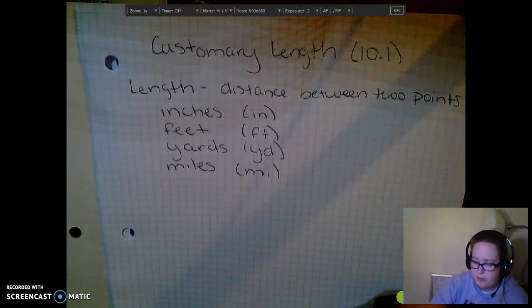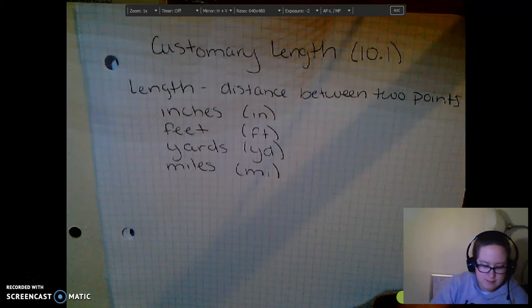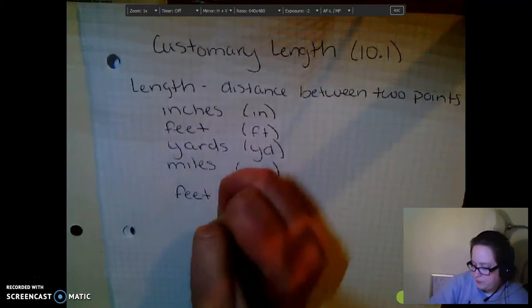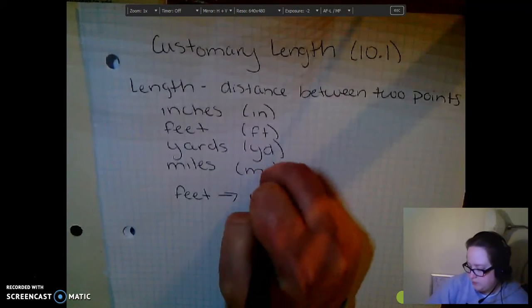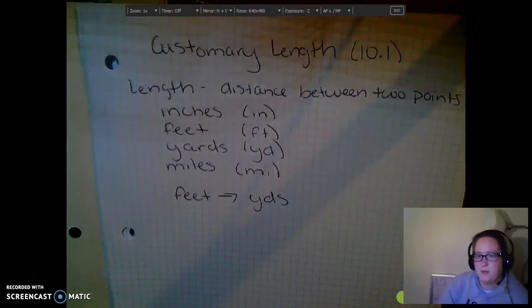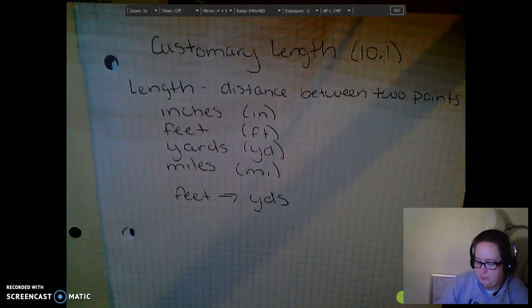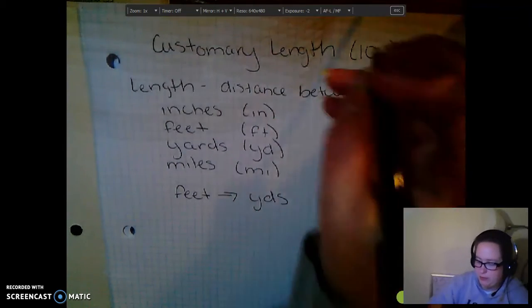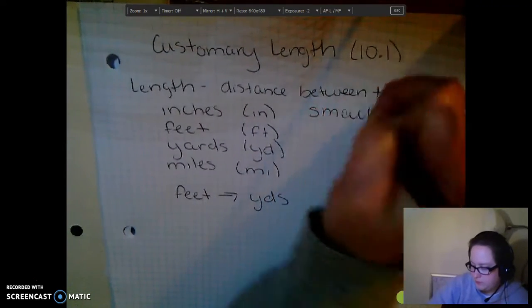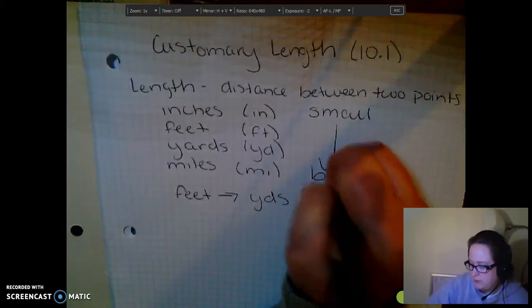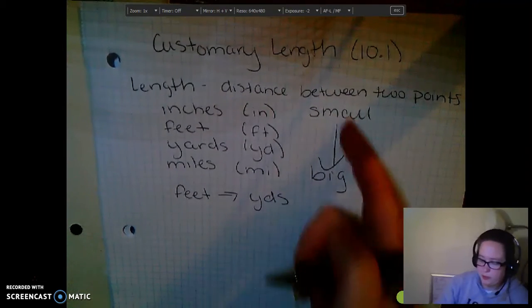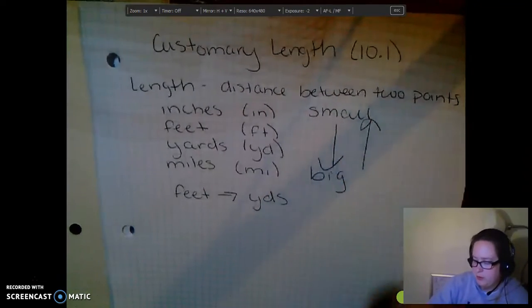So, if we have a problem that is asking us to convert between feet and yards, we're going feet to yards. There's a few things that we need to know in order to be able to solve this problem. One is we need to know, are we going from bigger to smaller? Which I have them in order. So, this is small to big. So, we need to know which direction we're going. Are we going from small to big? Or are we going from big to small?